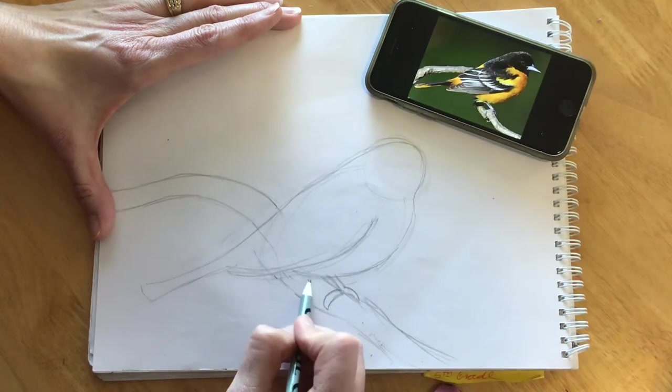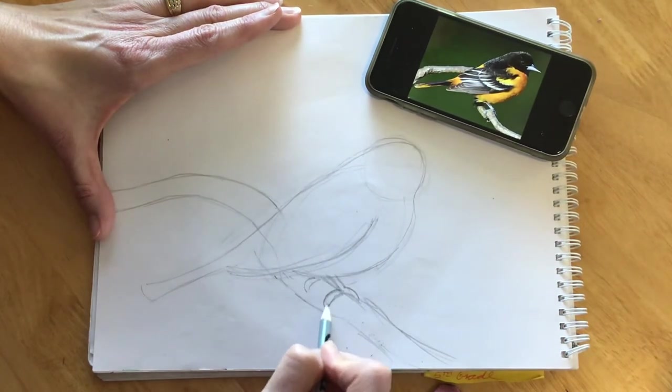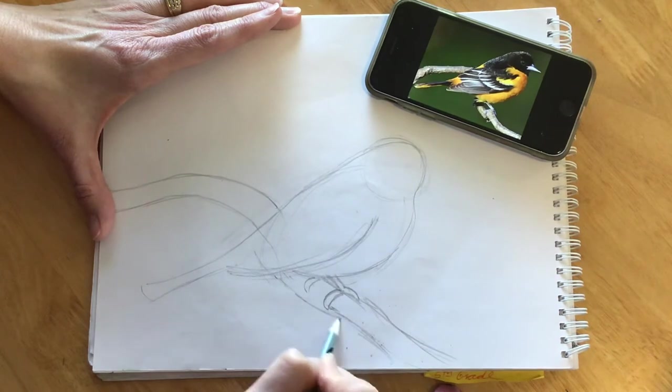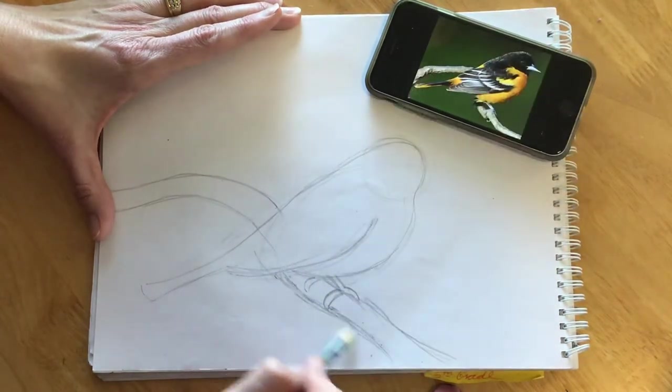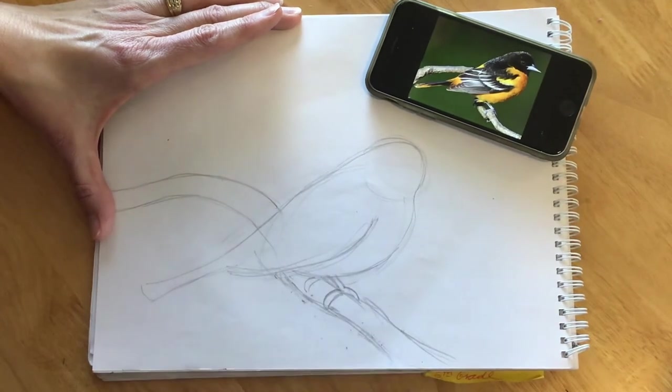Here we go. And I see a little moon over here. My branch is a little bit thicker than the one in the picture. There we are.